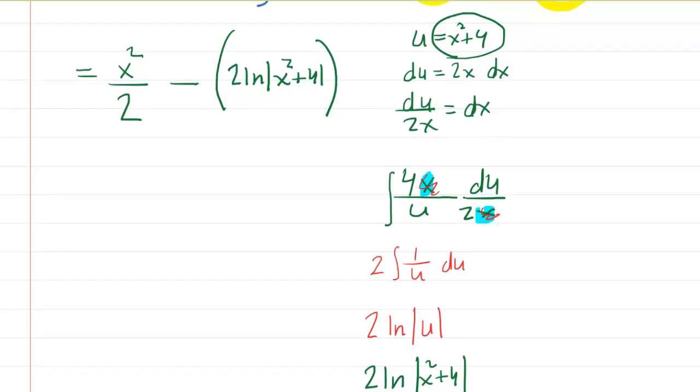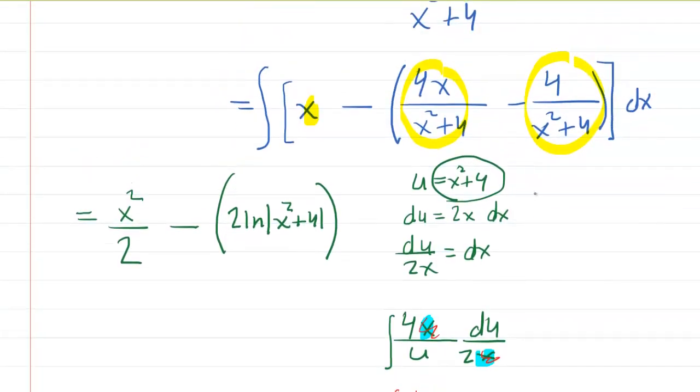And then the third integral, as noted, is going to be an arc tangent. So let's explore that one. We might want to just rewrite it, just to sort of clarify it a little bit. We have the integral of 4 over x squared plus 4 dx. And we could factor the 4 out, perhaps. We have 4 multiplied by 1 over x squared plus 4 dx.